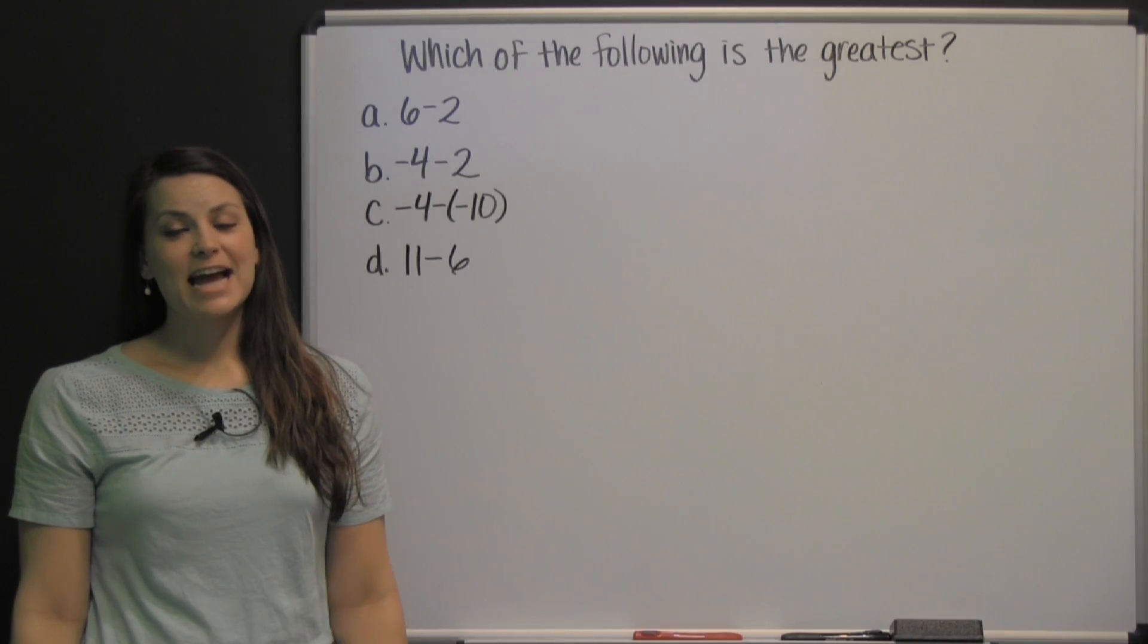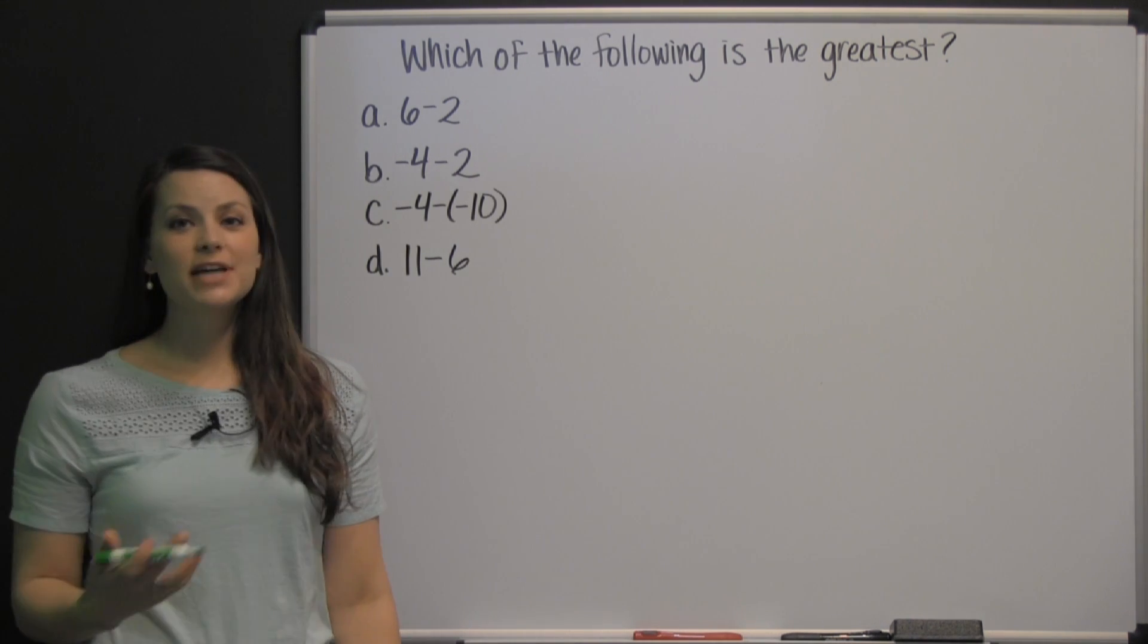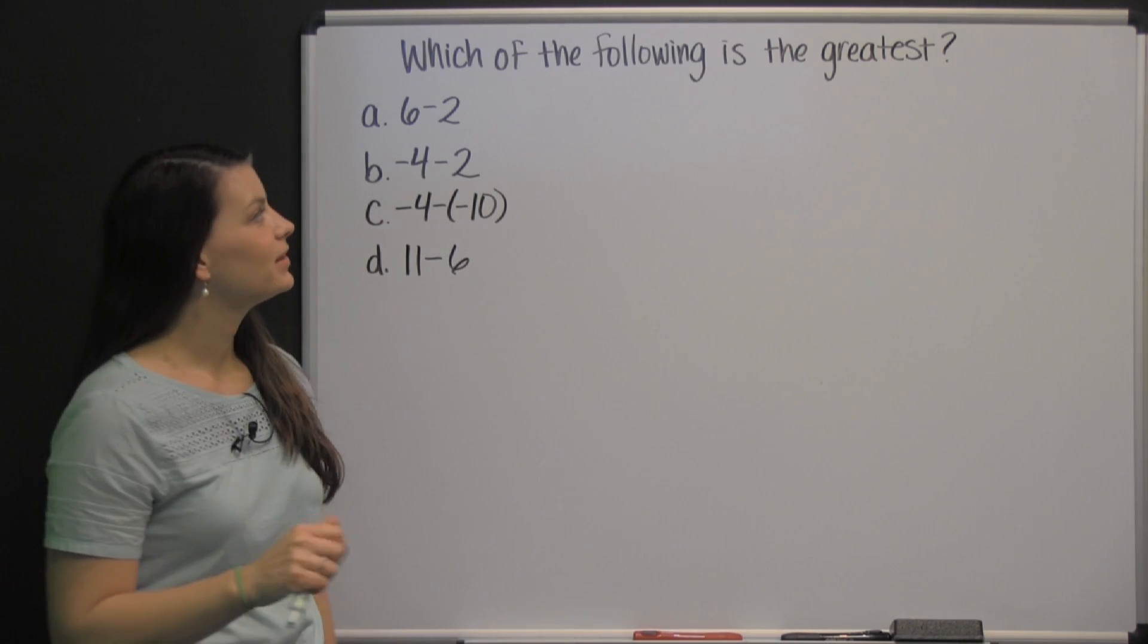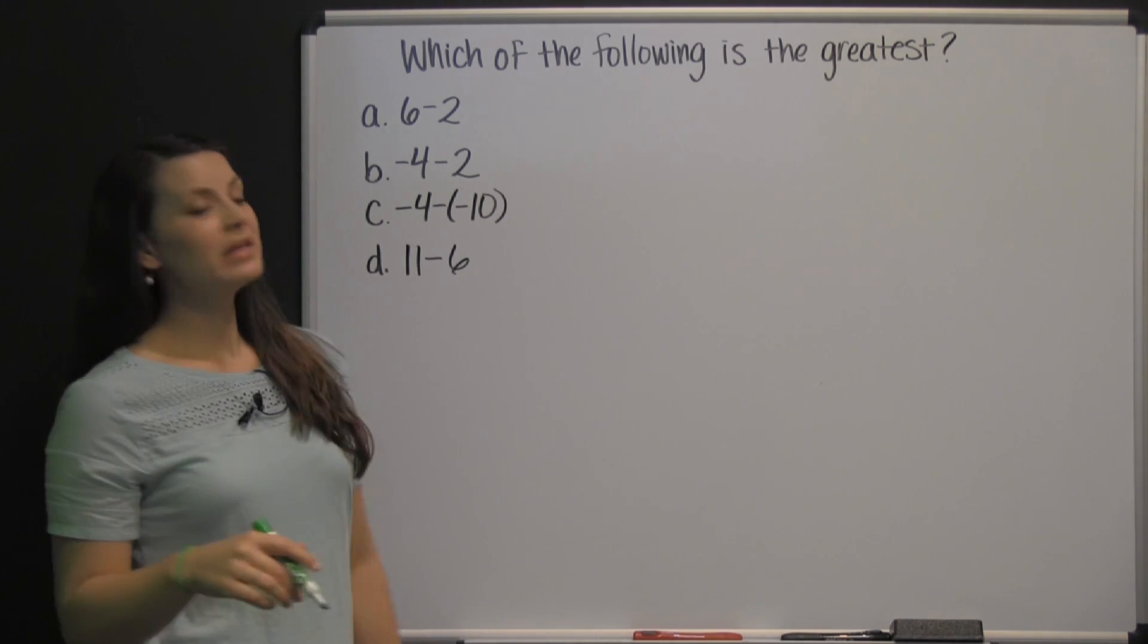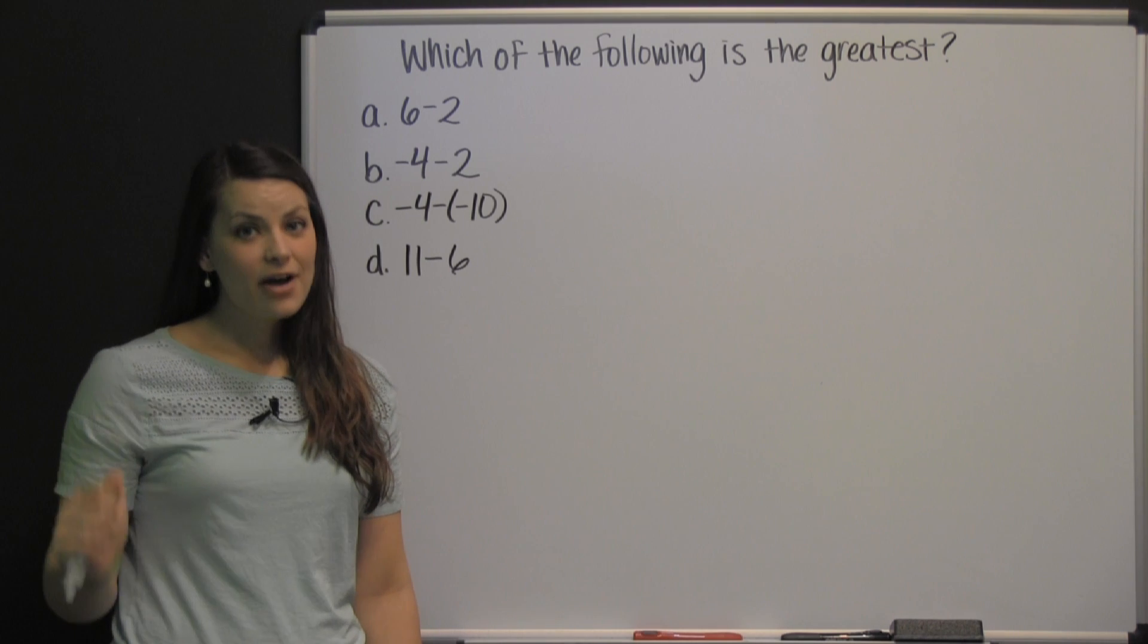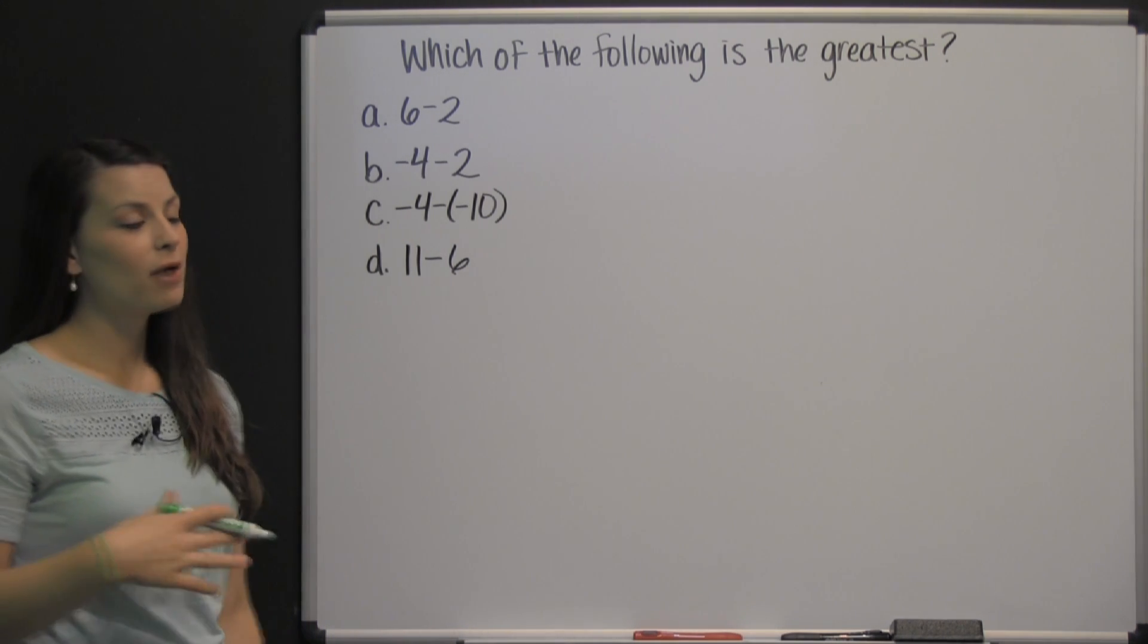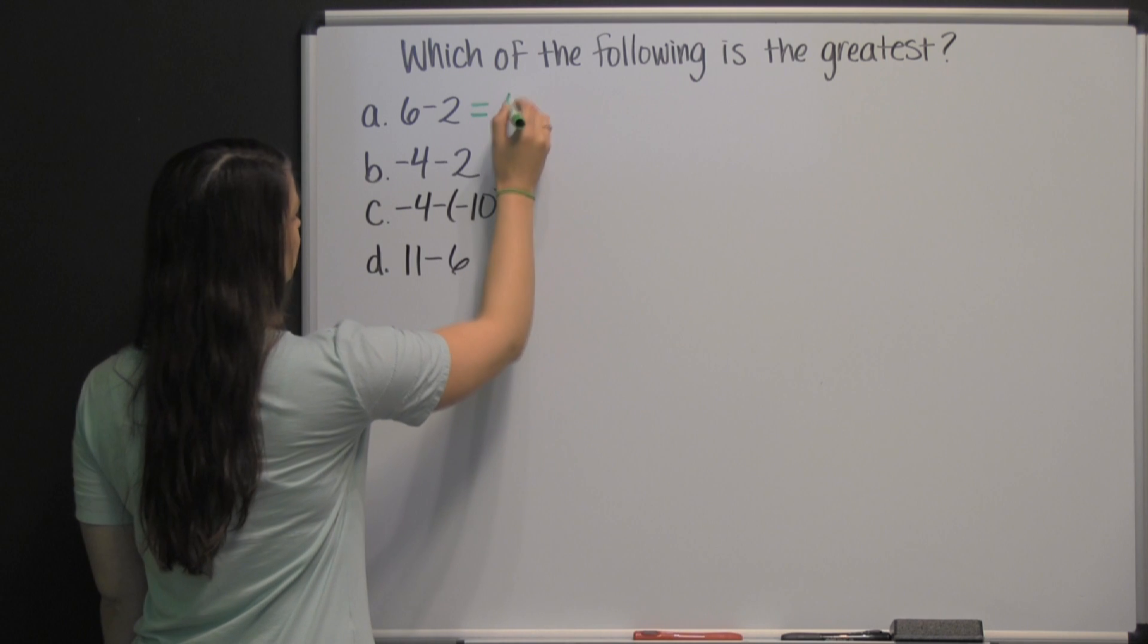The HSPT has two math sections. This question is an example of the type of question you'll see on the HSPT quantitative skills math section. It says, which of the following is the greatest? So what we need to do is simplify each one of these answers. You are not allowed to use a calculator on the HSPT exam, so you'll need to know how to simplify these types of problems on your own. First, six minus two is just four.